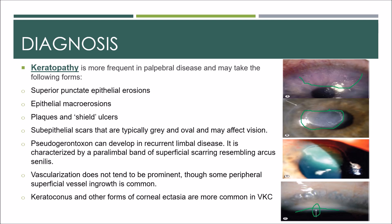Keratoconus and other forms of corneal ectasia are more common in VKC and are thought to be at least partly due to persistent eye rubbing. Herpes simplex keratitis is more common than average, though less so than in atopic keratoconjunctivitis; it can be aggressive and is occasionally bilateral.